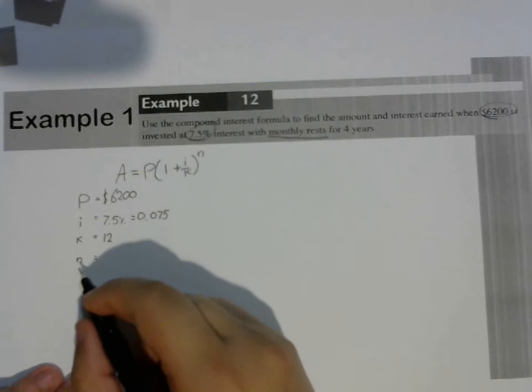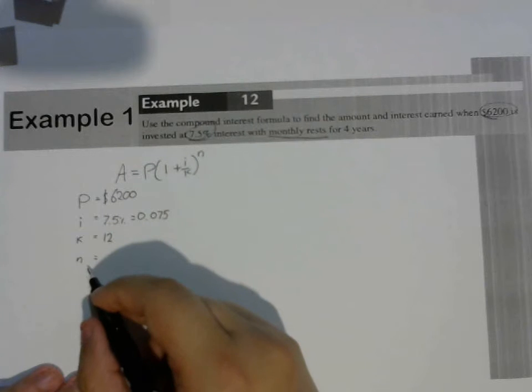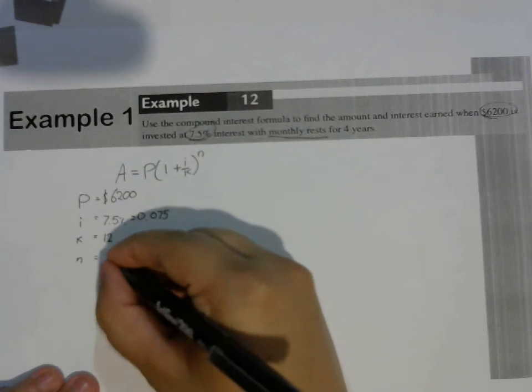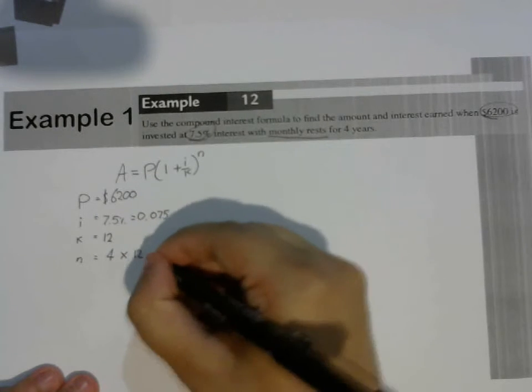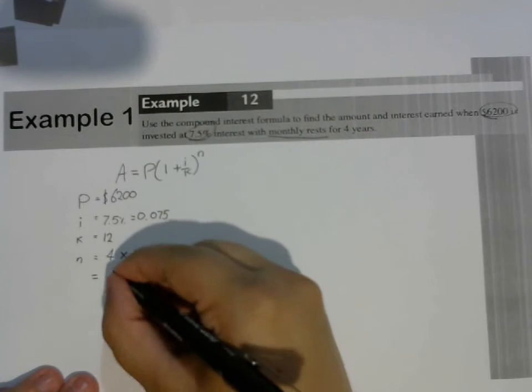N is the total number of rests. So to figure out what N is, we're going to take 4 and multiply it by the number of rests per year, which is K, which is 12. 4 times 12 is 48.